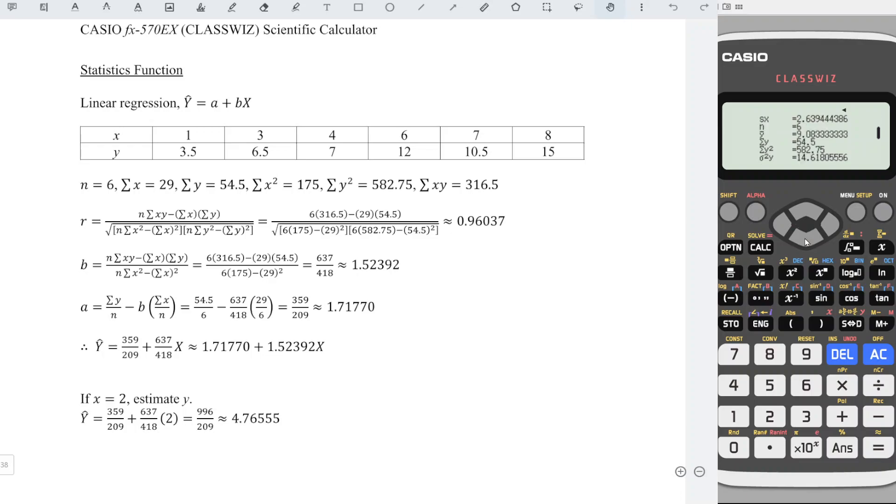Press down if necessary. Next, press AC. If we want to obtain the correlation and also the regression, we just have to press option again and look for regression calculations. And we should obtain A, B, and also R.